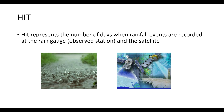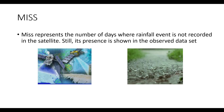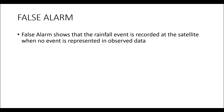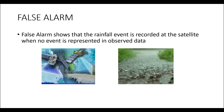Miss represents when there is rainfall on the ground but the satellite is not able to pick up that rainfall — so that is what miss represents. False alarm represents when there is no rainfall on the ground — the observed station did not pick up any rainfall — but the satellite is saying that there is rainfall. This is a false value, which is why it is referred to as a false alarm.